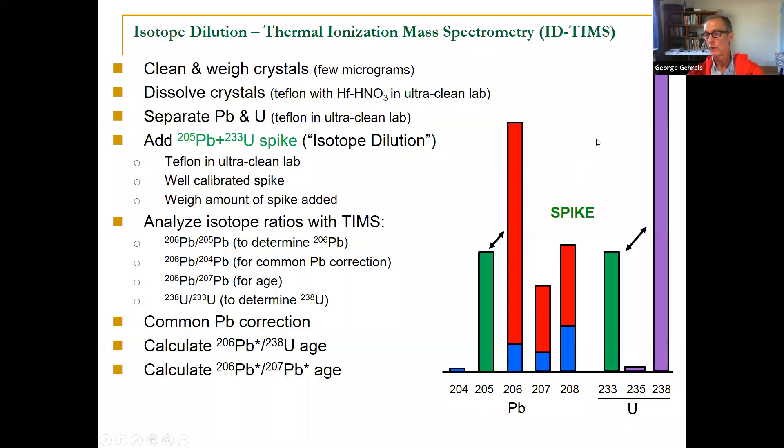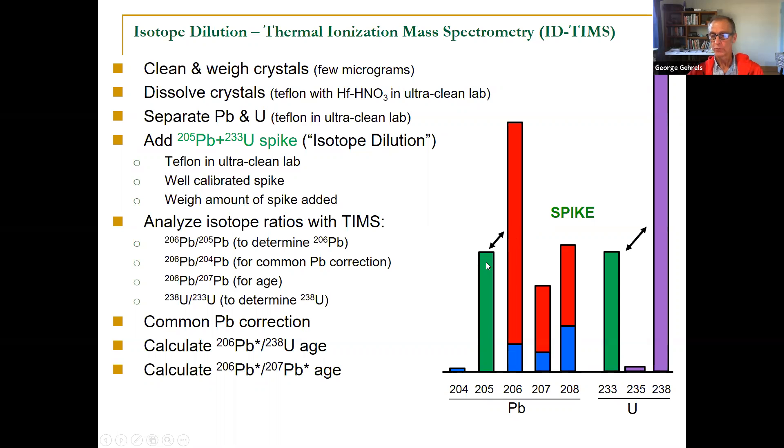And so in our mass spectrometer, we can do what mass specs are really good at. We can measure the 233, 238 ratio. We can measure the 205, 206 ratio. If you know how much 205 you put in, how much 233 you put in, then just from that ratio, you can calculate how much 206 is there and how much 238 is there. And then off you go.